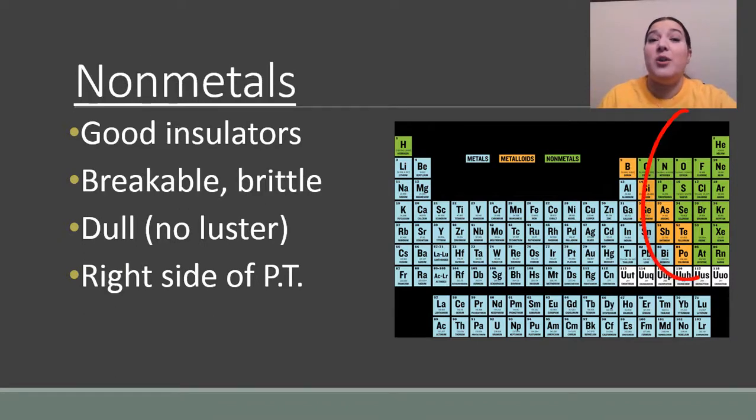Nonmetals are colored in green in this picture. They are basically the opposite of everything metals. So metals are good for conducting heat and electricity. Nonmetals aren't, so we call that a good insulator. Instead of being able to be stretched or bent with a hammer, nonmetals are just going to break. They are very brittle. Metals are shiny and nonmetals are not, which means they are dull or they lack luster. And they are on the right side of the periodic table.